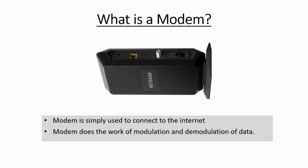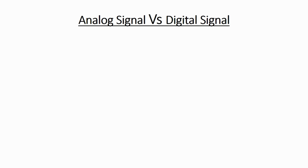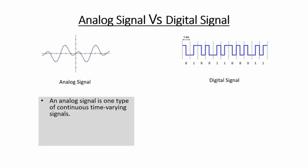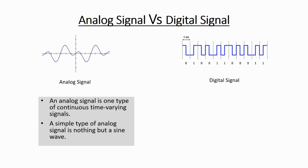This is how an analog signal looks like — it is a sine wave. And this is how a digital signal looks like — it has a kind of square structure. An analog signal is a continuous time-varying signal, which means it changes with time and with distance as well. So over a very long wire, as data is transmitted, the sine wave will change slightly. A simple type of analog signal is nothing but a sine wave.